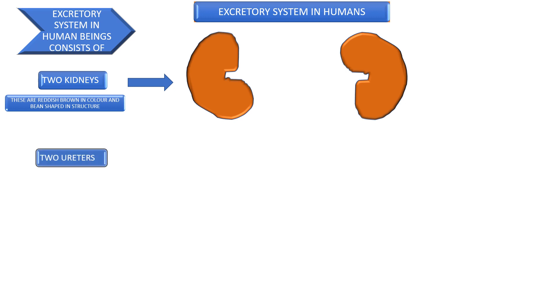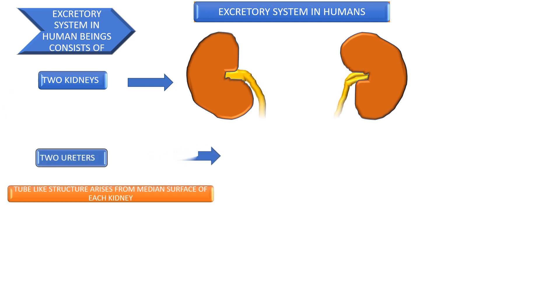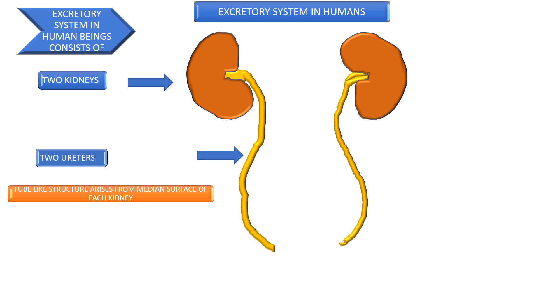Two ureters. These are tube-like structures that arise from the median surface of each kidney.